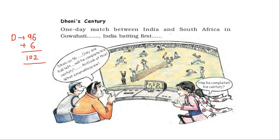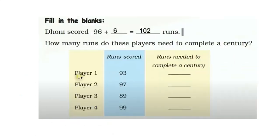The commentator asks: has he completed his century? And the answer to this question is yes. Since the number 102 is greater than the number 100, we can say that Dhoni has successfully completed his century. So Dhoni scored 96 runs initially, and he scored six runs more. The total runs will be 102. Dhoni scored 102 runs in total.